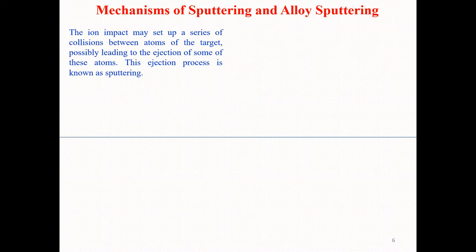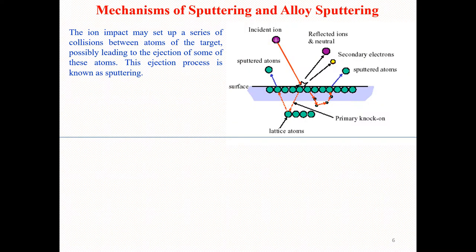As we discussed in the last lecture, in the sputtering process, mainly the ion impact may set up a series of collisions between the atoms of the target, possibly leading to the ejection of some of these atoms. This ejection process is known as sputtering. The ion impact may set up a series of collisions between the atoms of the target, and that collision possibly leads to the ejection of some of the atoms.